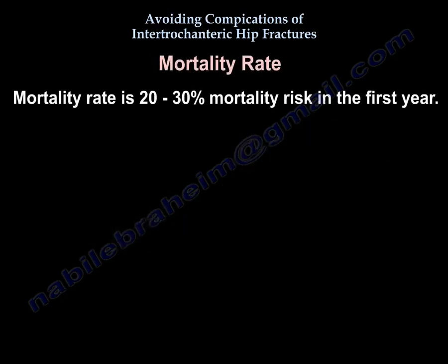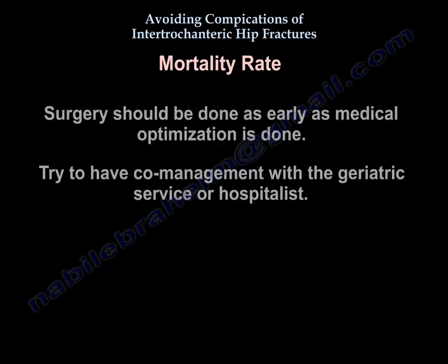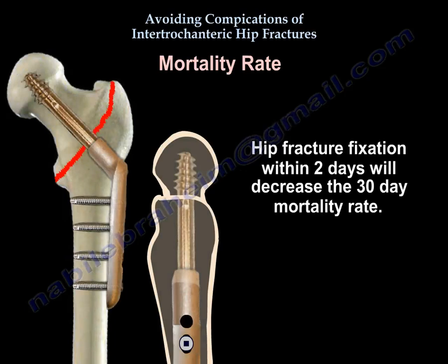Mortality rate is 20 to 30% in the first year. The patient at risk is usually an older male, 85 years or more, with an intertrochanteric fracture. Mortality is higher than with femoral neck fractures, and delaying surgery more than two days increases mortality. Multiple comorbidities — such as chronic renal failure, lung disease, and congestive heart failure — increase mortality, as does ASA class 3 or 4. Surgery should be done as early as medical optimization is achieved. Co-management with a geriatric service or hospitalist is recommended, and hip fracture fixation within two days decreases the 30-day mortality rate.